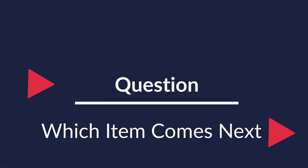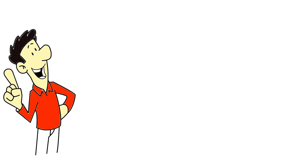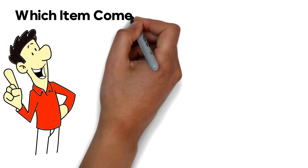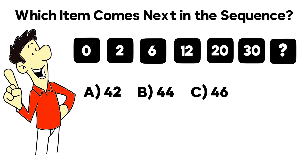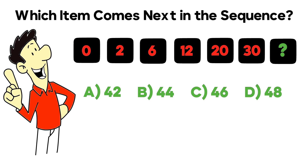Very frequently on the test, you might be asked to detect the pattern. In this question, we're being asked which item comes next in the sequence. We're presented with a sequence of items — six items are visible: 0, 2, 6, 12, 20, and 30. The next item is missing. You're being asked to select one of four choices: choice A is 42, choice B is 44, choice C is 46, and choice D is 48.